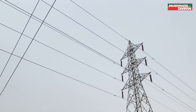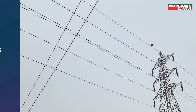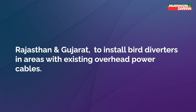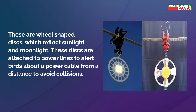Considering the option of installing underground power lines in the future, the SC ordered the respondents — the central government and the state governments of Rajasthan and Gujarat — to install bird diverters in areas with existing overhead power cables. These are wheel-shaped disks that reflect sunlight and moonlight and are attached to power lines to alert birds about cables from a distance, thereby avoiding collisions.